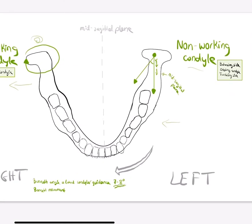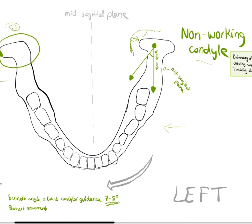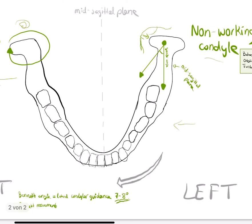This is the condyle, and here is the medial wall of the fossa. Here is the articular eminence, and here is the fossa. If there is space between them, you can have movement between them.